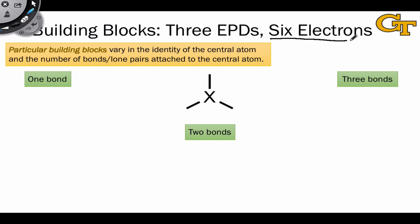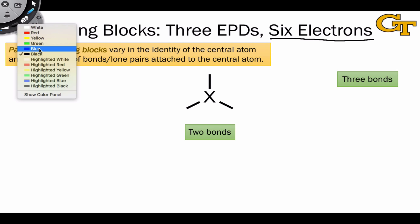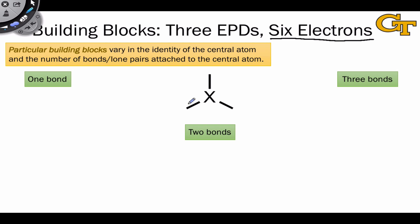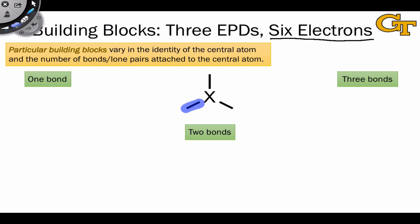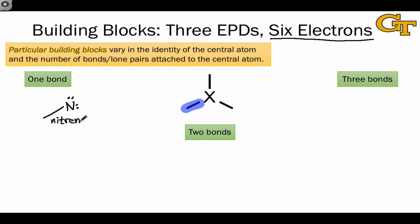The six-electron building block bearing three-electron pair domains can have one, two, or three bonds. This building block violates the octet rule, so these species tend to be quite reactive and appear mainly as reactive intermediates. When the building block has one bond, this corresponds to neutral nitrogen — since the formal electron count around nitrogen is 5 — giving an intermediate known as a nitrene, which is quite rare, but illustrates an example of a one-bond case in our system.